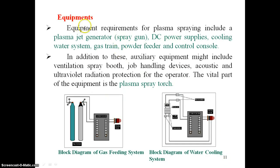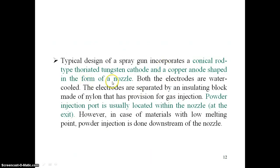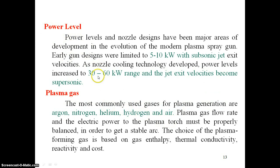Equipment includes the plasma spray booth, the nozzle, the cooling arrangement, a cathode made of tungsten, and an anode made of copper — both electrodes are water-cooled. There are ports for injection of powder particles inside the nozzle. A proper power level must be maintained: it works in the range of 5 to 10 kilowatts at subsonic jet level and 30 to 60 kilowatts at supersonic jet velocity level.